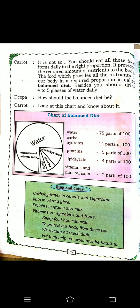So what did Deepa eat? She ate carrot halwa that her mother had prepared. She ate well and slept well. In the dream, the carrot came and they were discussing: what are the foods that give us energy, help us grow, give protection to the body, and how many nutrients are there? All this I explained to you.